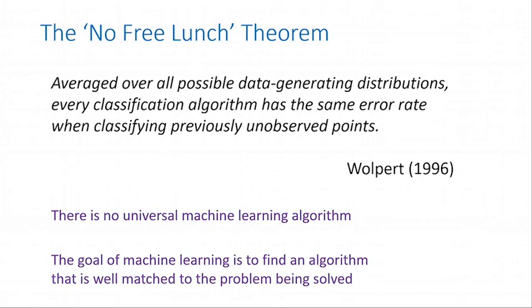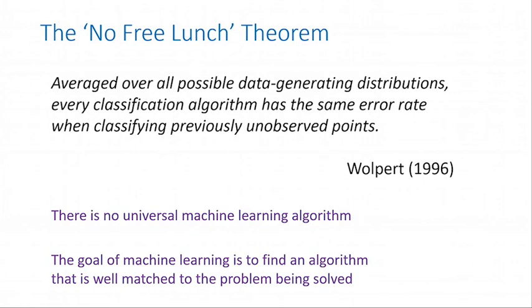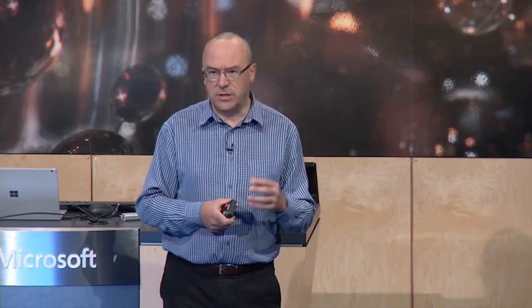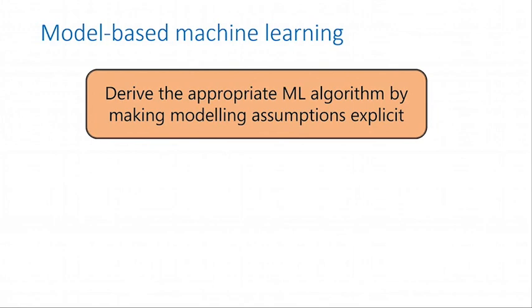The goal of machine learning is not to find the single machine learning algorithm. Instead, the goal is to find a particular algorithm that's well-suited to the specific problem you're trying to solve. One way to think about this is in terms of model-based machine learning. The difference between one algorithm and another — between an algorithm that's good for your application and one that's not — concerns the assumptions or constraints built into that algorithm.